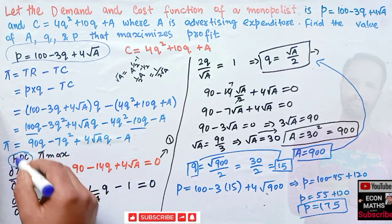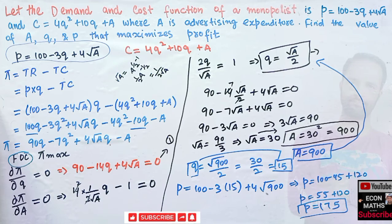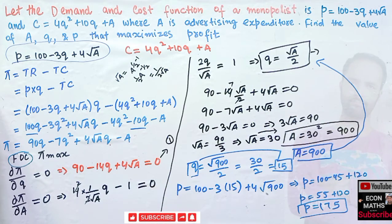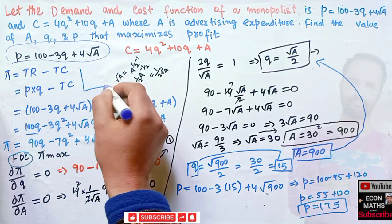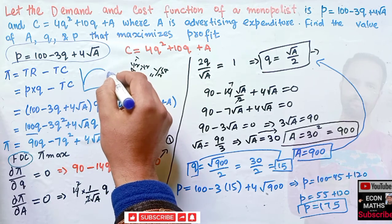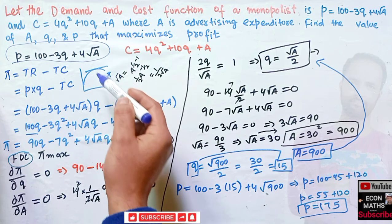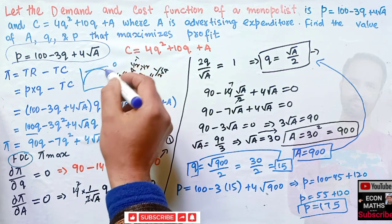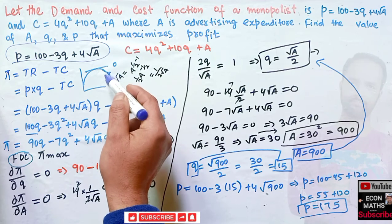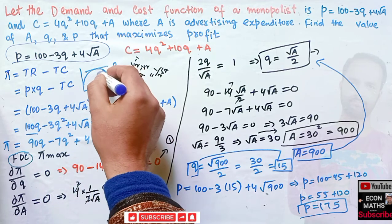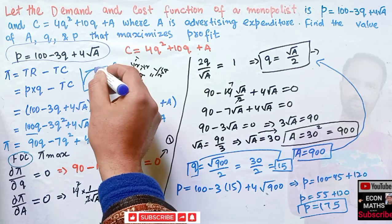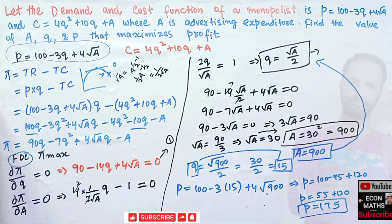We used only the first order condition here. If we want to verify, we can check the second order condition: take the second derivative of the profit function and confirm it is negative, which would confirm we are at a maximum. However, that is not required here since we have a unique solution.